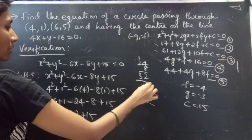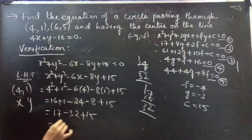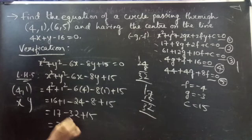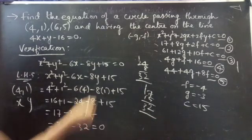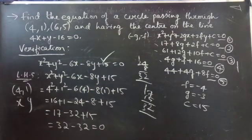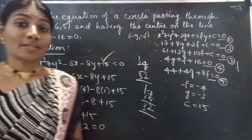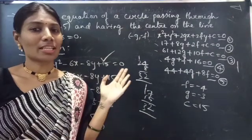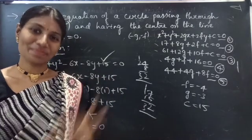So this equals 0, confirming this is the equation of the required circle. We have seen a problem from circles in this video. Hope you understood. We will see you in the next video. Bye bye.